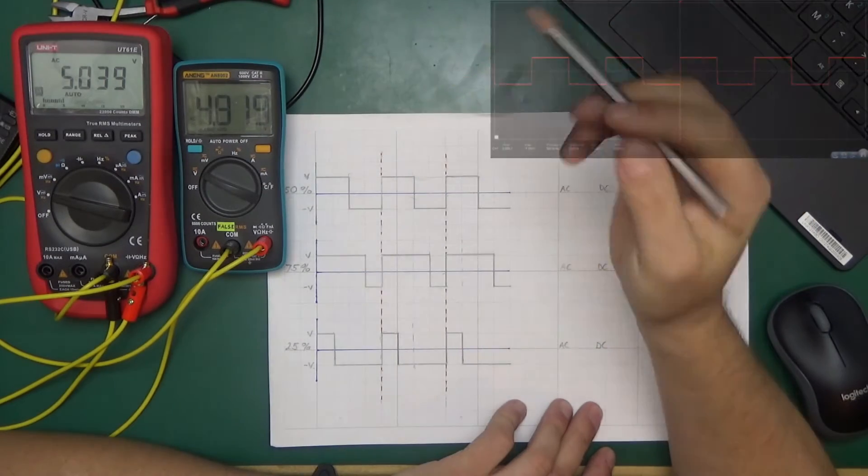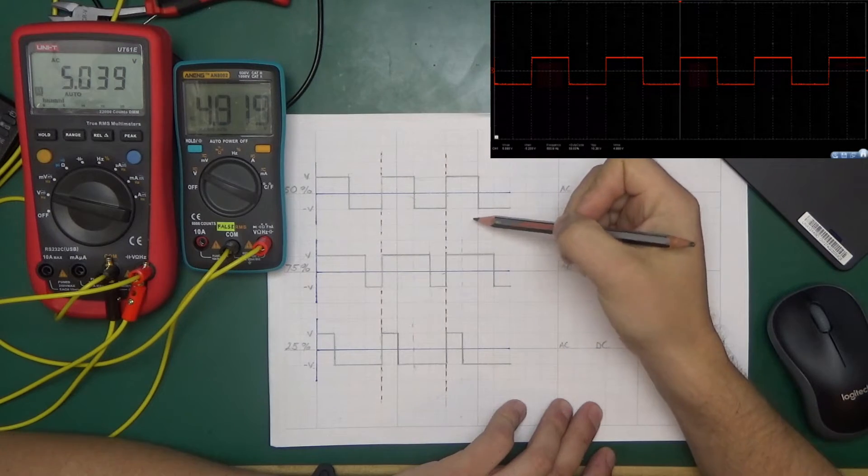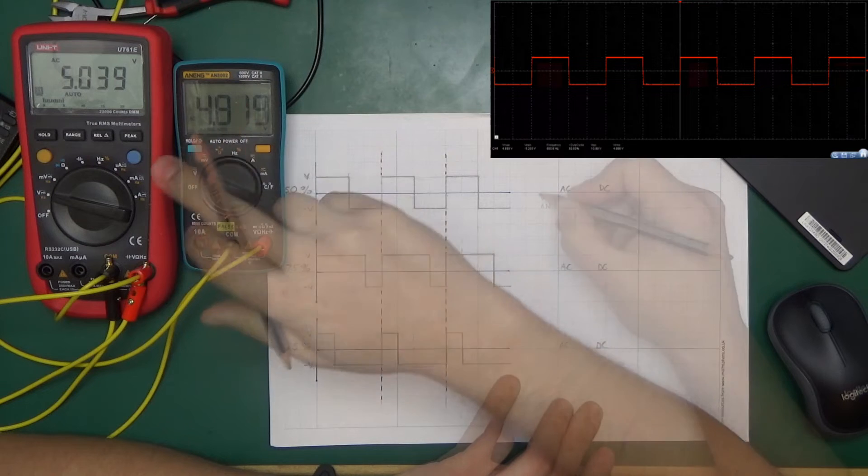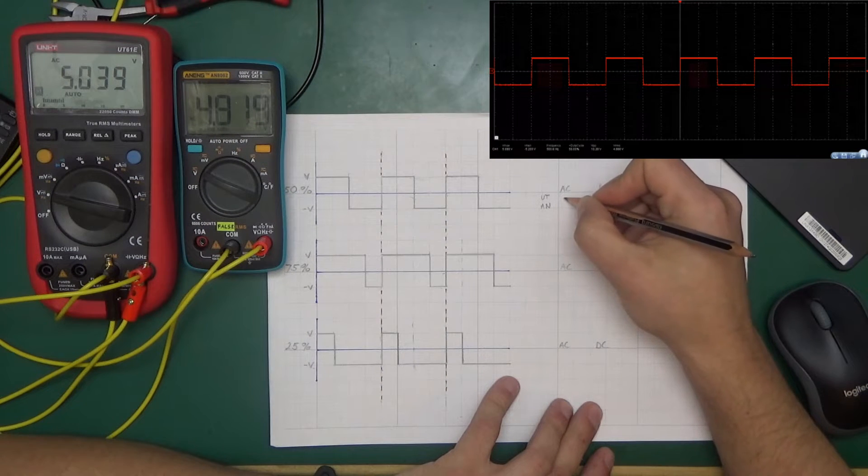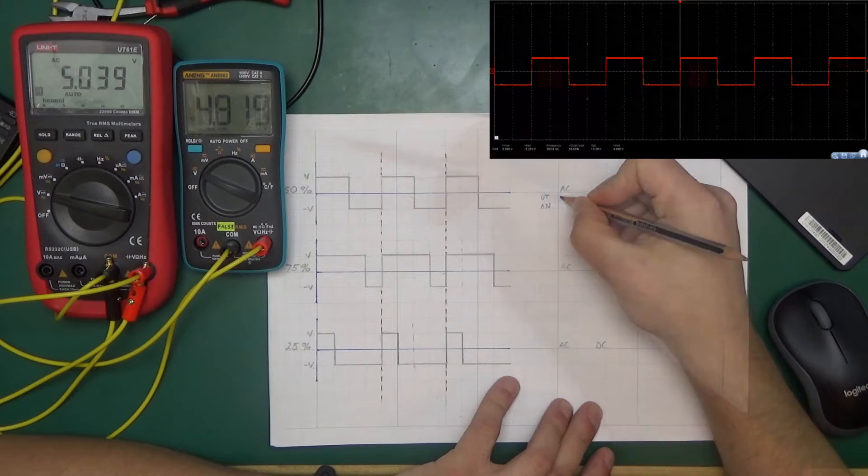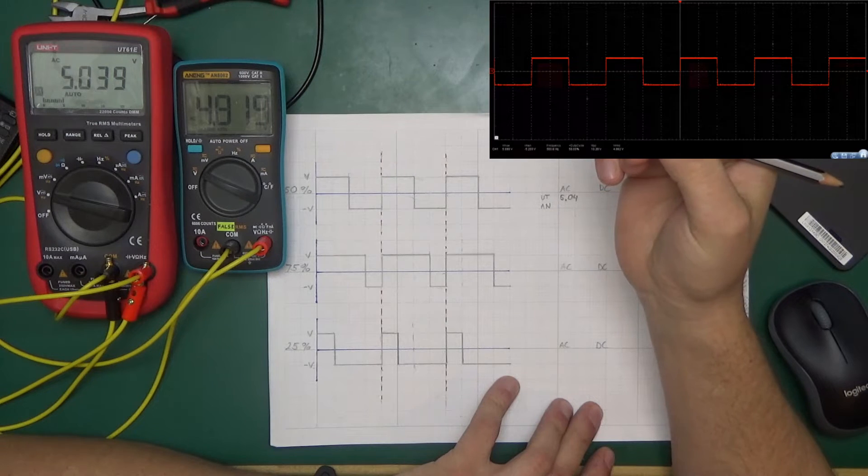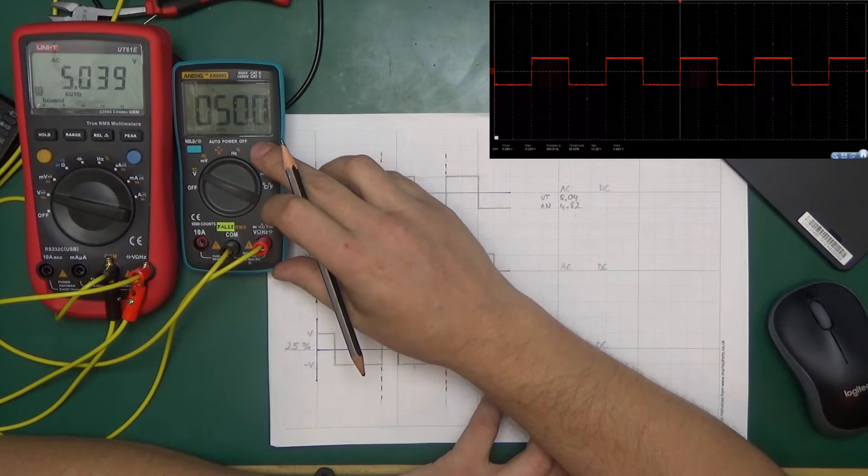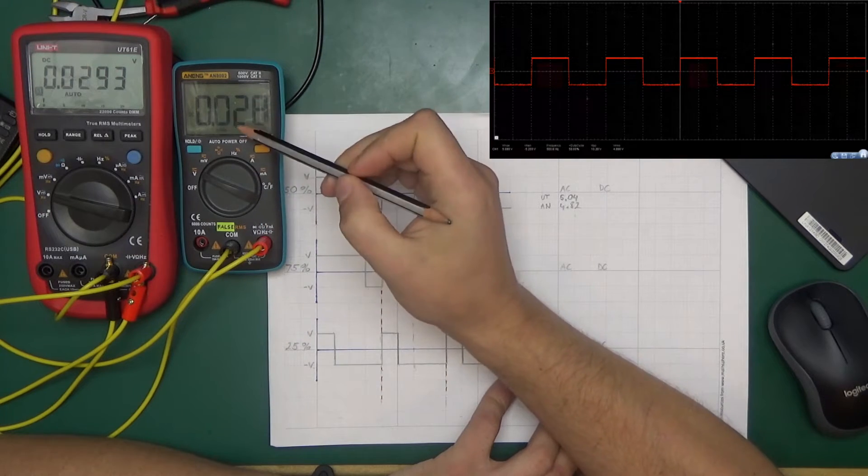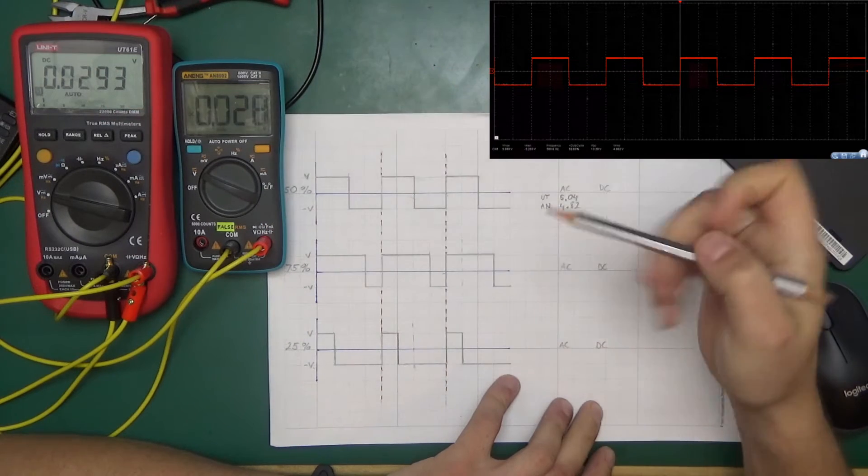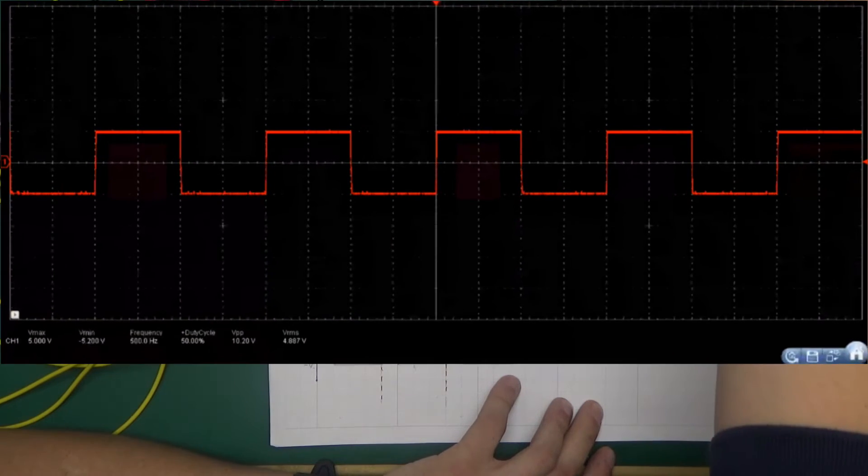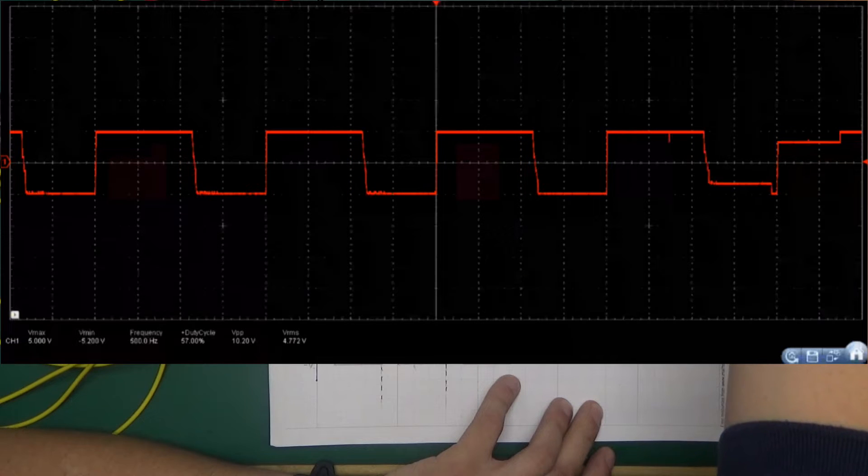So let's take a few measurements in all those three cases and then we'll have a look if we get the right values. So first we're looking at the 50%; this is the first case. Both multimeters are set to AC true RMS. So Unity is showing 5.04 volts and Anang showing 4.82. Now let's check what the DC measurement will be. In both cases, we've got 0.03 of a volt, so almost nothing. Let's change the waveform; let's go up to 75%.